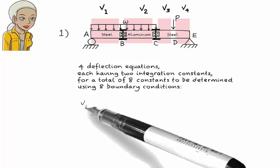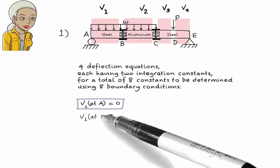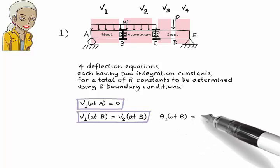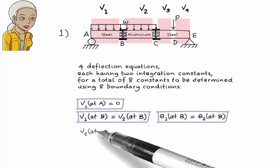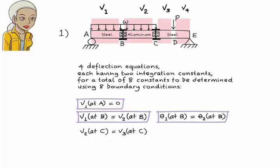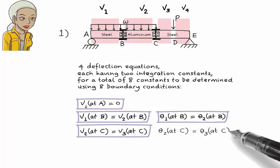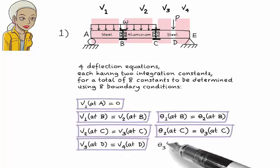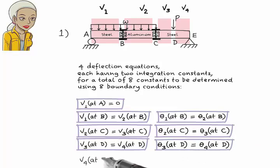The boundary conditions are: deflection at the roller support must be 0; deflection at B where the steel and aluminum segments meet must be continuous; slope at B must also be continuous; deflection at C where the aluminum and steel segments meet must be continuous; slope at C must also be continuous; deflection at D where the concentrated load is applied must be continuous; slope at D must also be continuous; and deflection at the pin support must be 0.